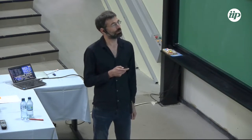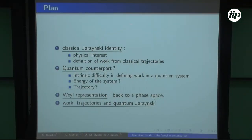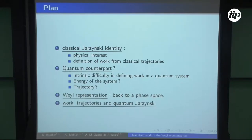The plan is the following: first I will talk about classical Jarzynski — the basics — although it was said before, I will probably say it in a different way. Then I will talk about the quantum counterpart, and I will try a different approach from what was done this morning. I will try the Wigner representation, and I will show that some kind of trajectories appear which make it easier to understand what's happening.